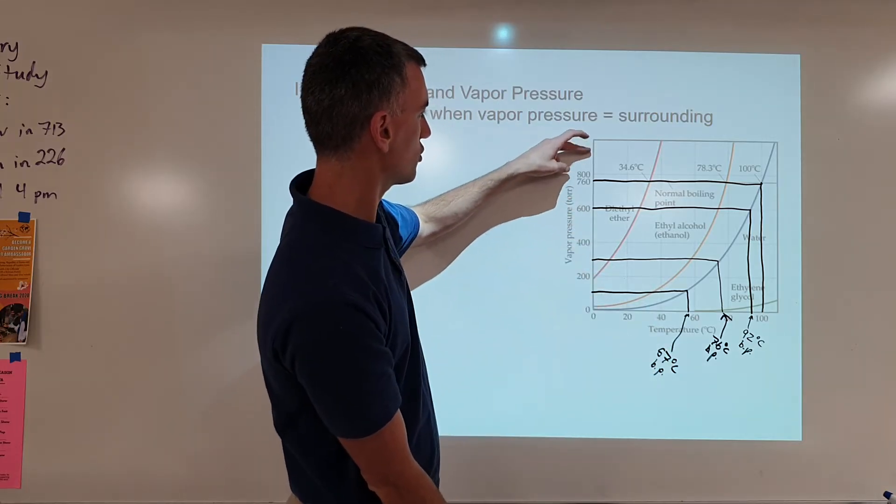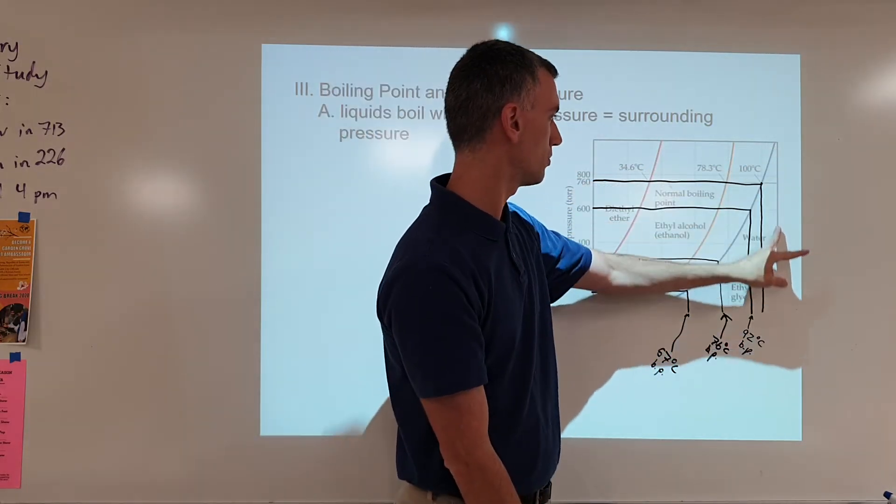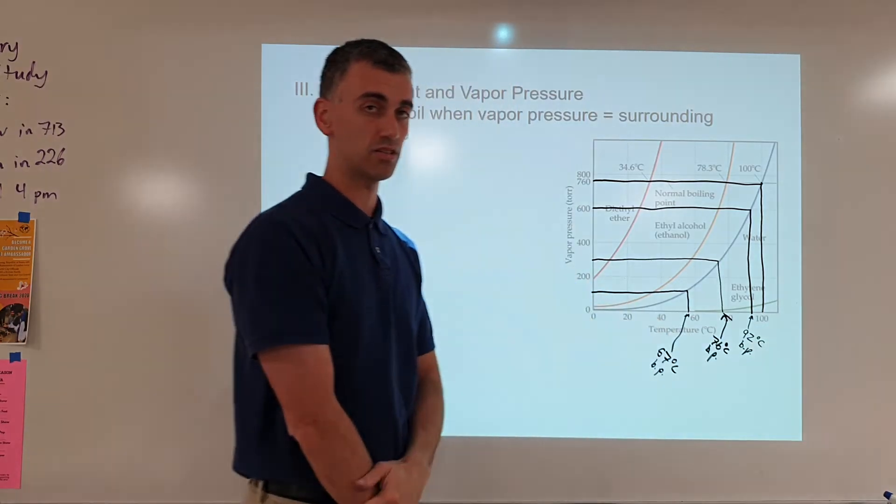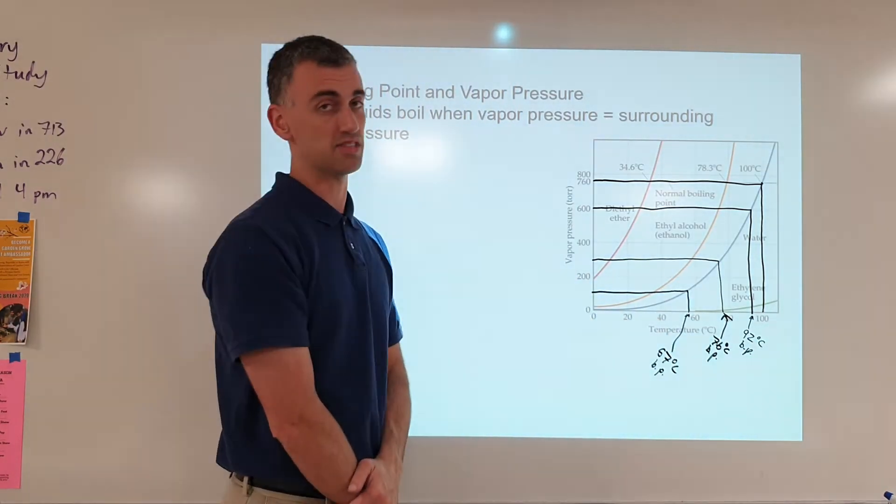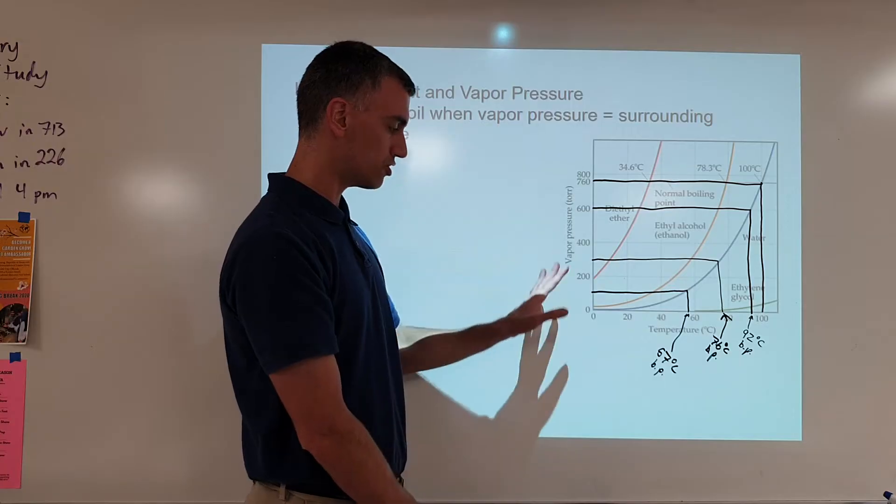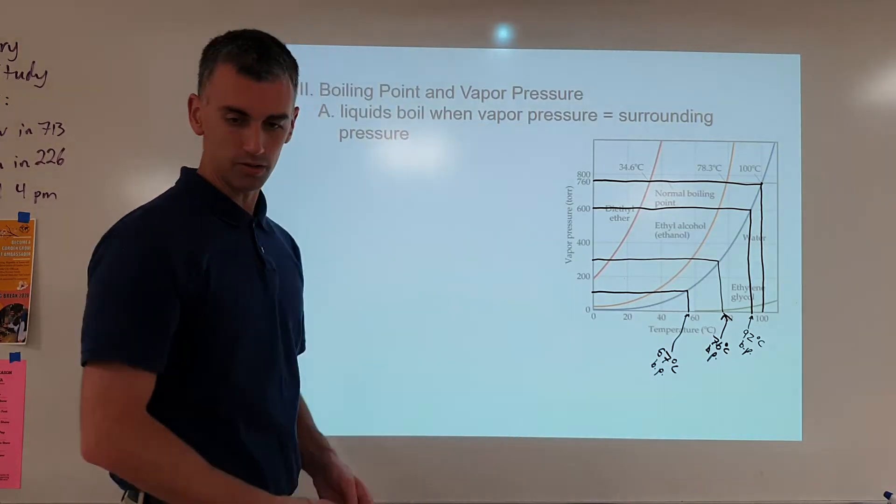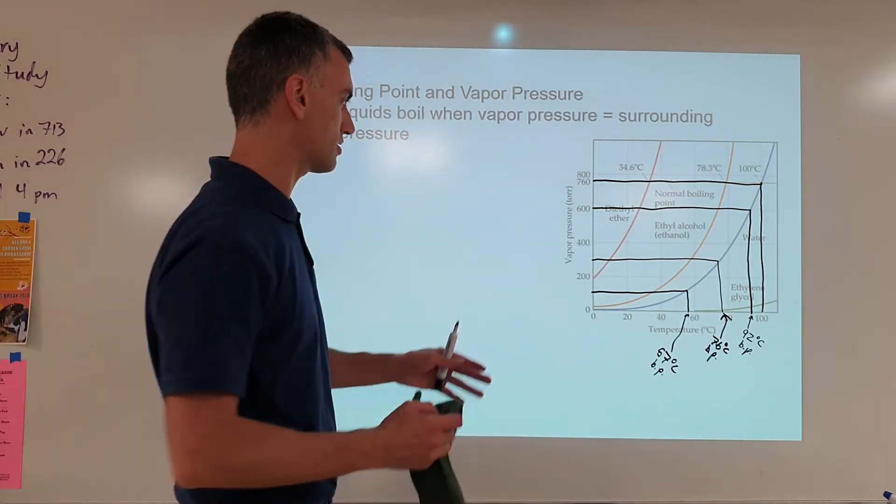If you were to do a higher pressure, like up here, the boiling point would be at some temperature above 100 degrees Celsius. So when we say water boils at 100 degrees Celsius, we just mean here at sea level. Now, this is true for water, but you can do this for any of the other substances on the graph.